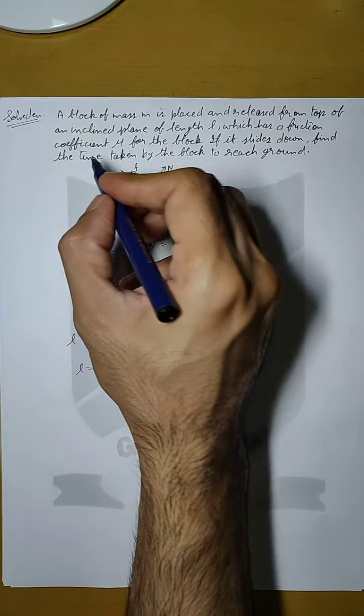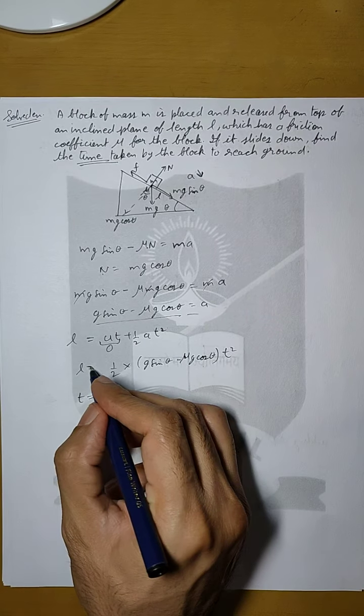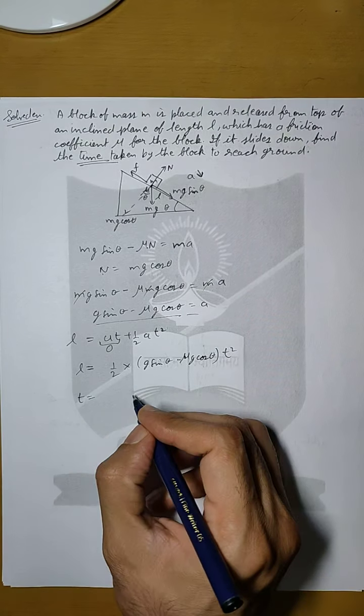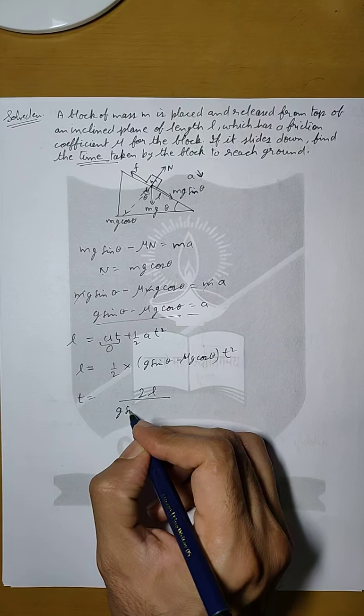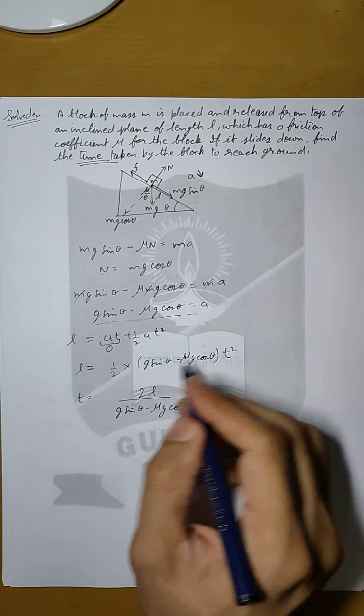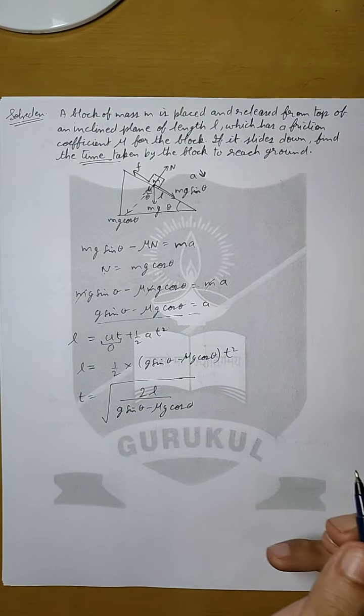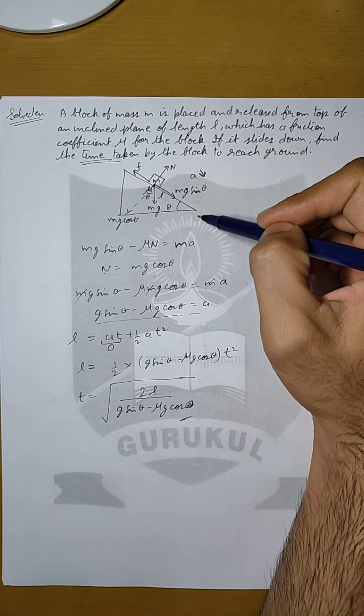So if we solve this equation, if we simplify this equation then it will be equal to 2L and this will go in the denominator. So it will be g sin theta minus mu g cos theta and square so it will be a square root here. So this will be the answer. So this will be the time taken by the block to cover the distance L.